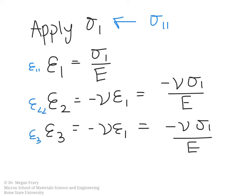Just so that we're clear here about what these symbols mean. So these are the strains that result from sigma one or sigma one one.